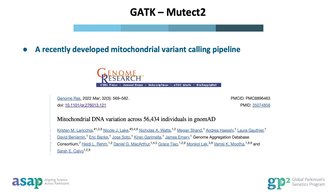Several critical aspects of mitochondrial DNA diverge from the assumptions underpinning our nuclear variant calling pipeline. These include its circular structure and the abundance of hundreds to thousands of mitochondrial DNA copies in each cell. Therefore, the gnomAD team, in collaboration with the GATK team, developed a new mitochondrial DNA calling pipeline derived from somatic short variant calling. This pipeline was employed to generate the gnomAD v3 mitochondrial DNA call set.